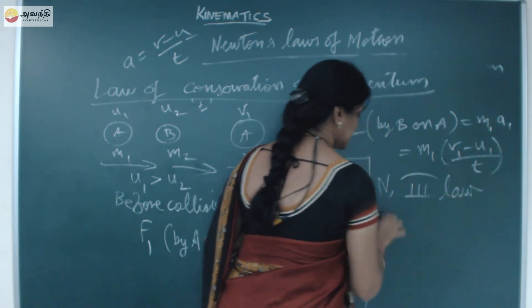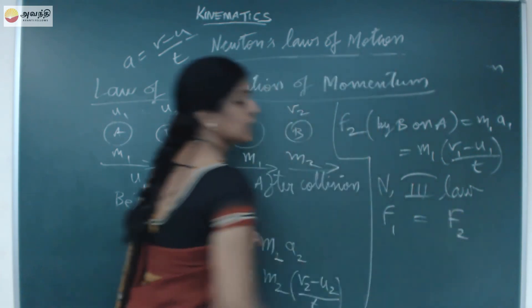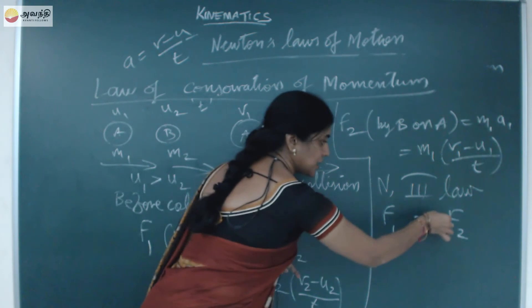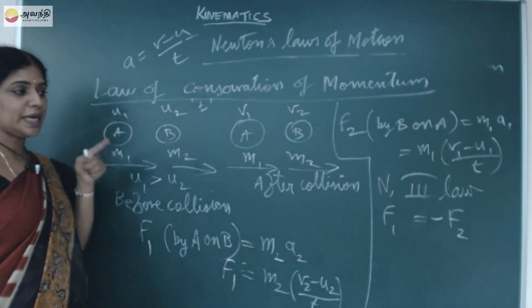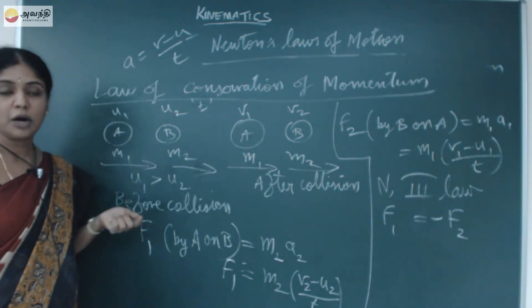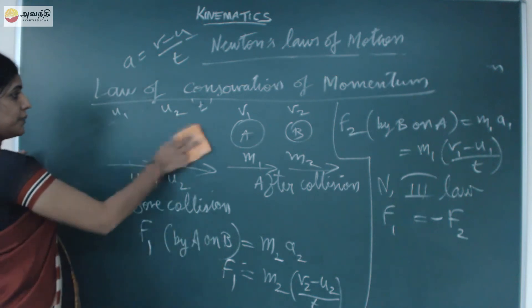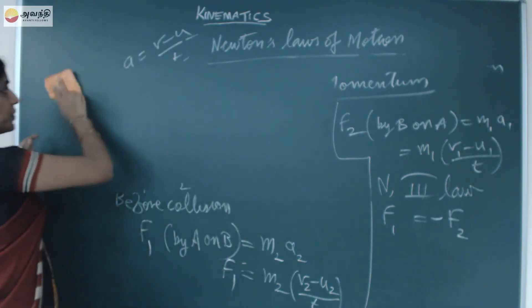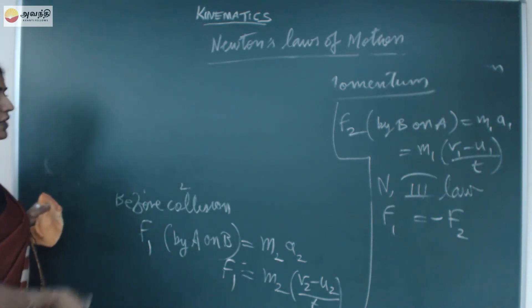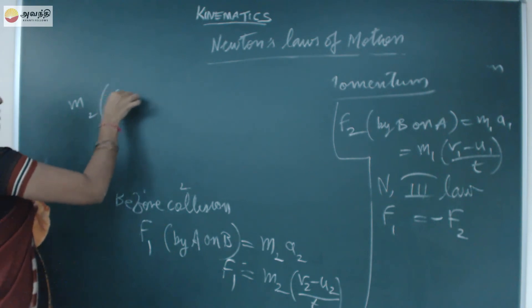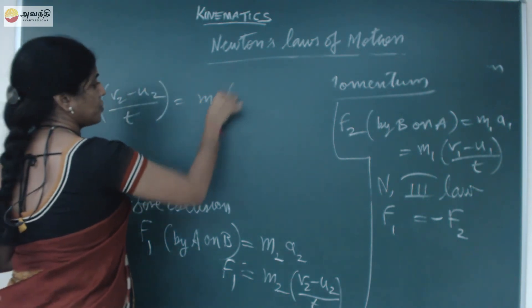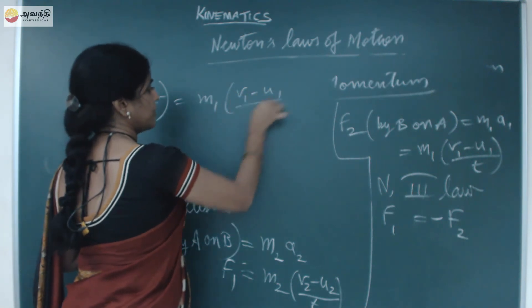But they will act in opposite directions. So according to Newton's third law, those two forces F1 and F2, they will be equal in magnitude but will act in opposite directions. The negative sign indicates they are acting in opposite directions. Now substitute the F1 and F2 values. So what happens if you substitute the values of F1 and F2?